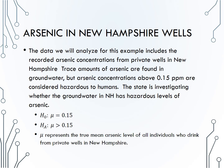The data we will analyze for this example was discussed in the bootstrapping supplement available on D2L and on the STAT216 home page. It includes data on the recorded arsenic concentrations from private wells in New Hampshire. Trace amounts of arsenic are found in groundwater, but arsenic concentrations above 0.15 parts per million are considered hazardous to humans. The state is investigating whether the groundwater in New Hampshire has hazardous levels of arsenic. Therefore, the null hypothesis is that the mean arsenic concentration of the toenail clippings for those using private wells in New Hampshire is 0.15, and the alternative is that the mean arsenic levels are above 0.15.